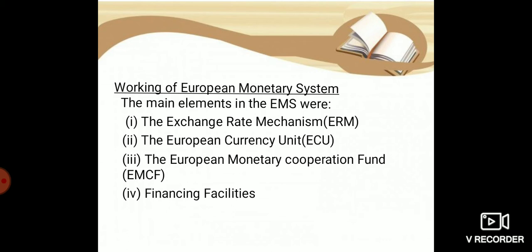The last element is financing facilities. Members of the European Monetary System had access to credit facilities which aimed at helping countries with public deficits to manage their transitory problems and defend their exchange rate parities. These facilities covered very short-term and medium-term requirements and were operated by their central banks.